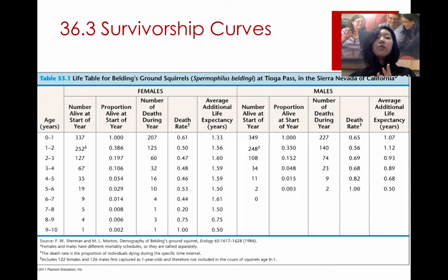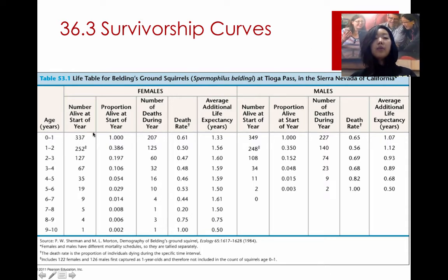Shifting gears now to survivorship — so not just talking about population, but how those populations grow and survive over time. This is an example of a life table, which tells you information about how many members of that species or population are alive at a certain point in time, and generally the number of deaths that happen. You can use both the number alive and the number of deaths to calculate the overall life expectancy and the different rates.